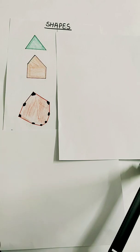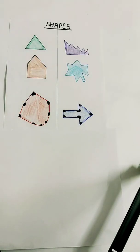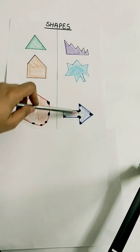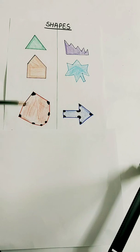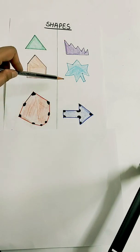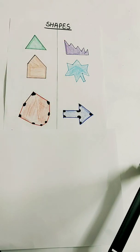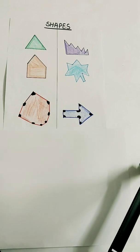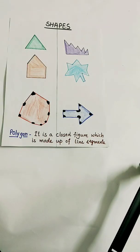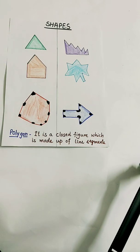Now are these the only shapes which we use? Well, we also use these kinds of shapes. These are also closed figures, also made up of line segments, and all are two-dimensional. So together these all are known as polygons, because a polygon is a closed figure which is made up of line segments.